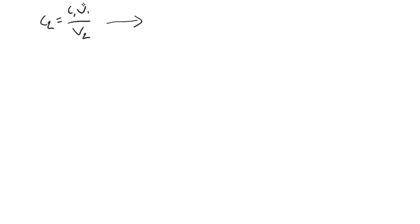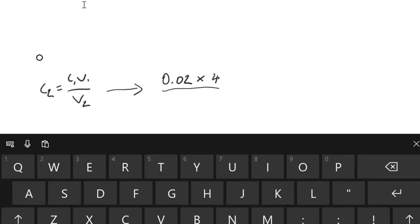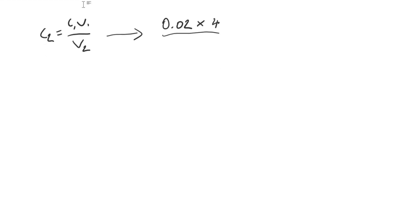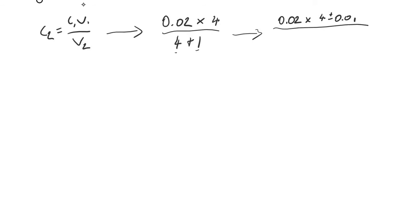For one of the dilutions here: 0.02 multiplied by 4 mils original, divided by 4 plus 1 mil of water for our second volume. So we're adding 1 mil of water and 4 mils of potassium iodate.